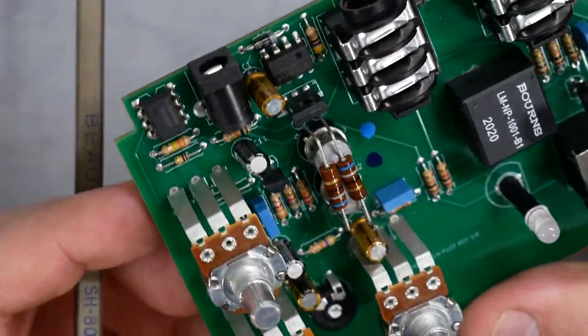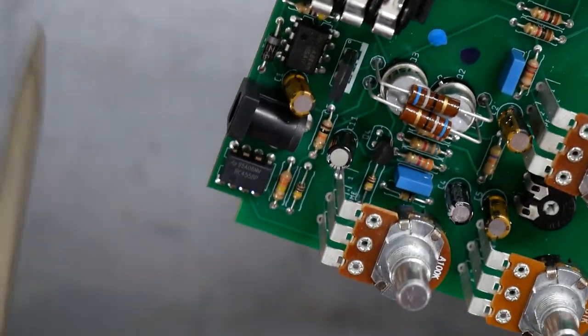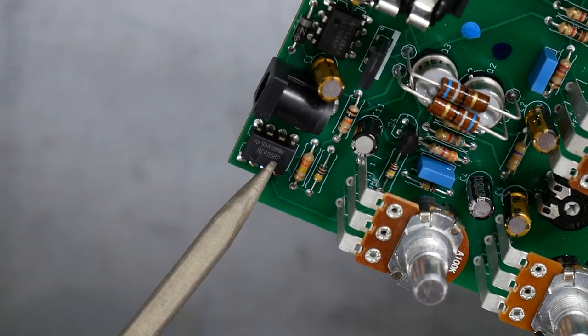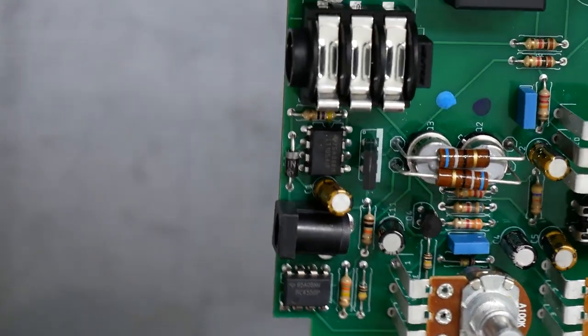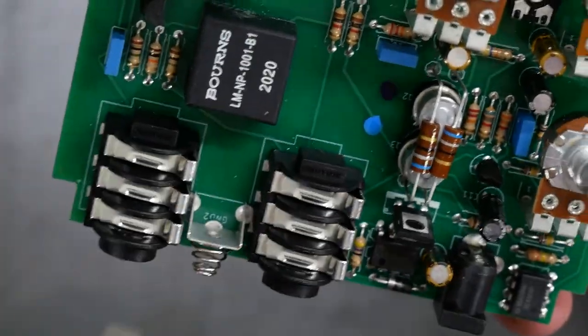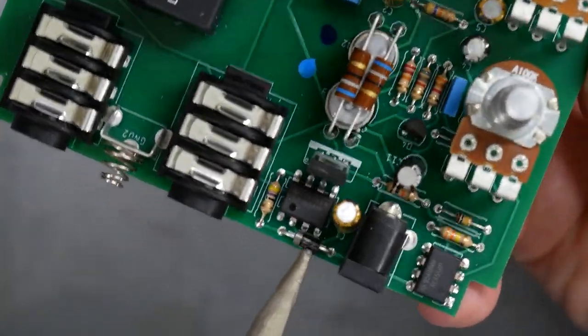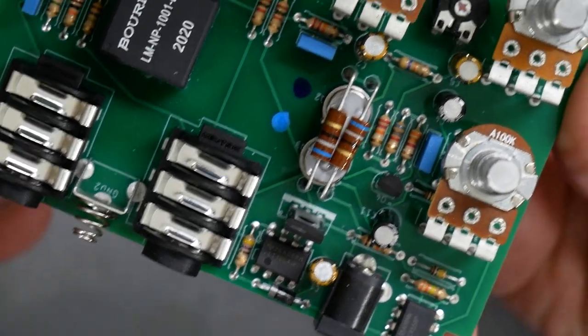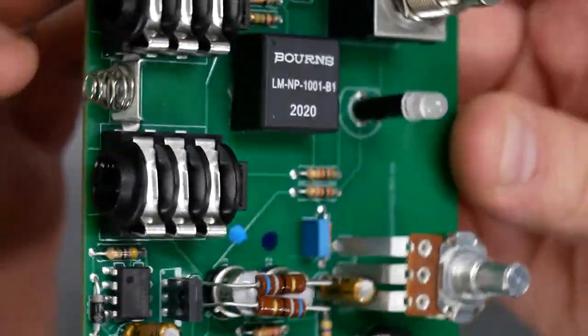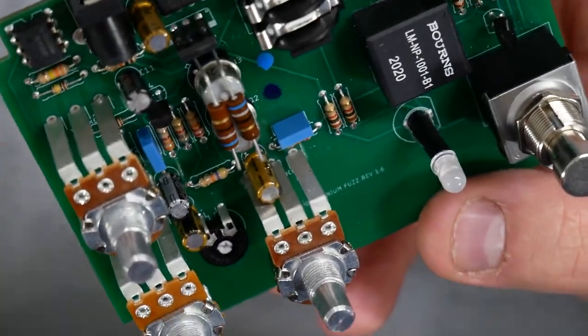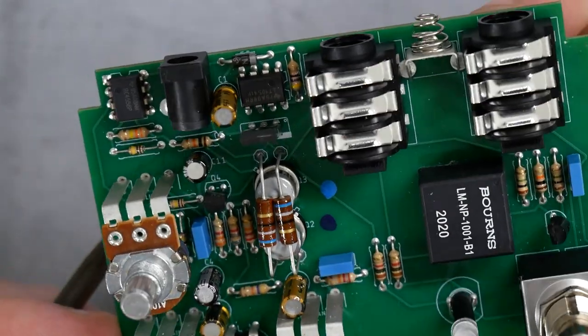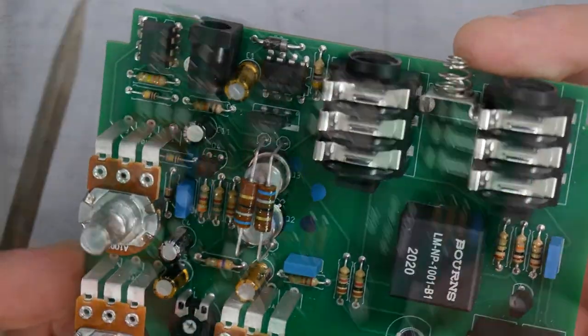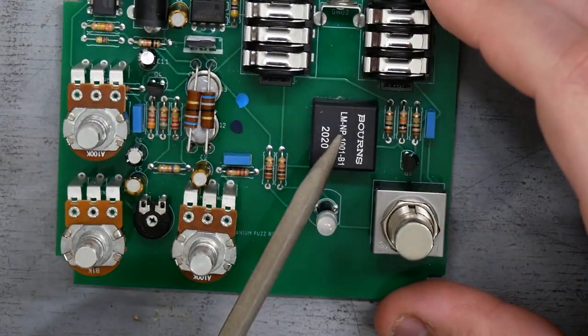Over in this corner, we got our two ICs. This here is a Texas Instruments RC4558P, which is an extremely common standard dual op amp. And this chip here is a Texas Instruments LT1054IP, which is a voltage regulator or voltage, well, in this case is being used as a voltage inverter. It's giving us our negative supply for the PNP germanium transistors.